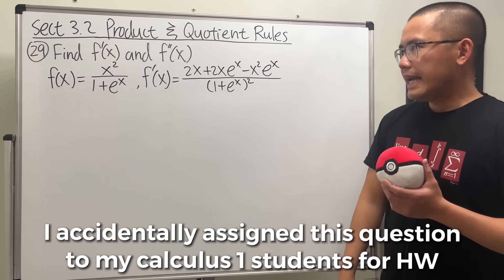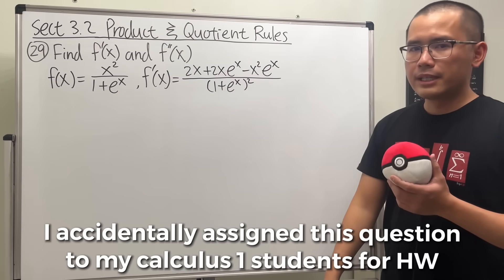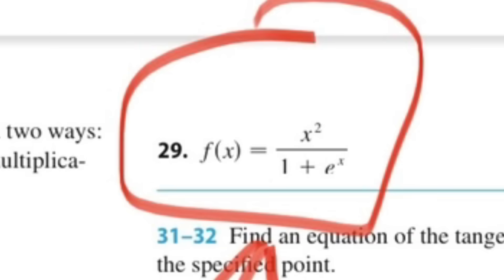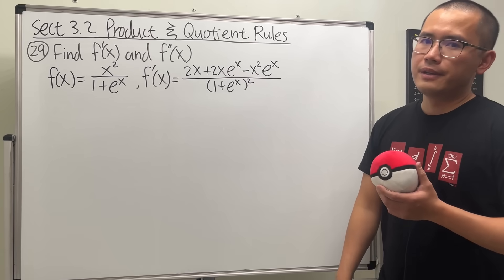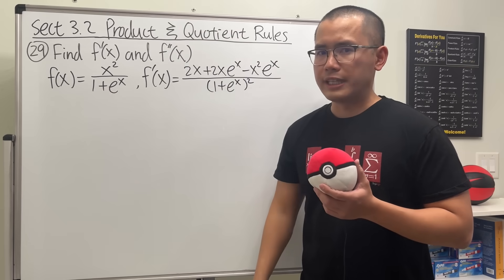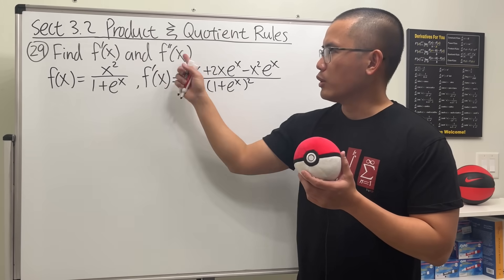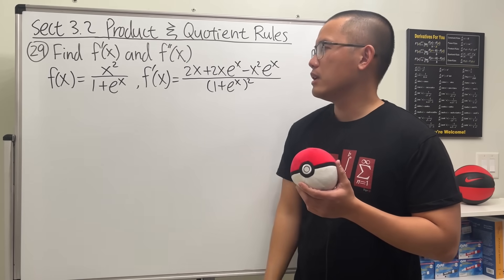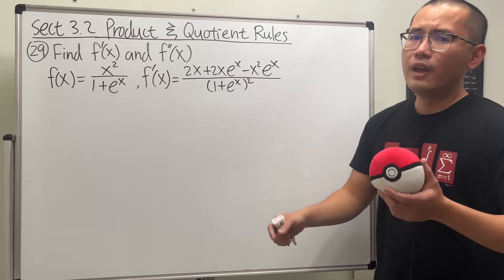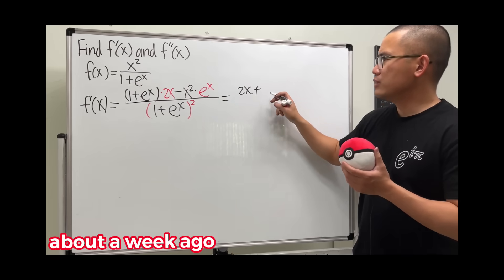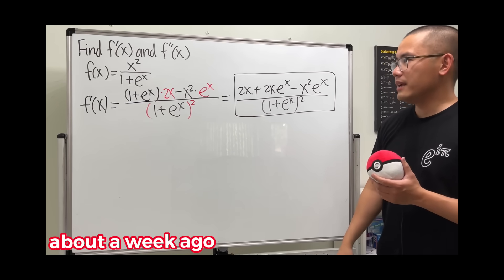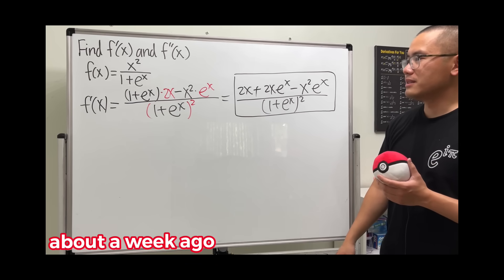Here's the story: I accidentally assigned this question to my Calculus 1 students for homework, and I don't think this question is fair at all. We are in the product rule and quotient rule section, and the question is asking us to find the first and also the second derivative of this function. We can use the quotient rule to get the first derivative — no big deal. Now we are going to work out the second derivative.